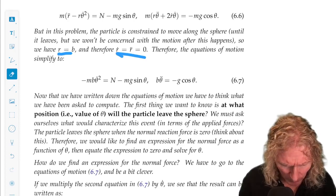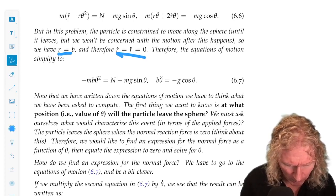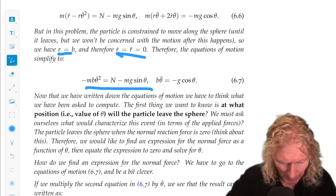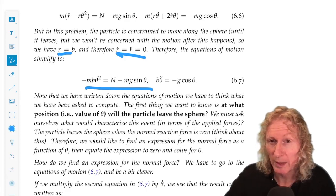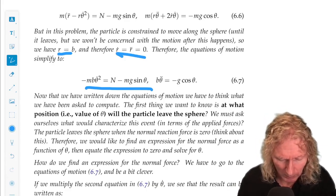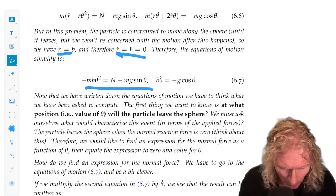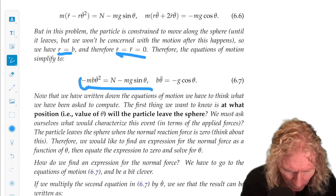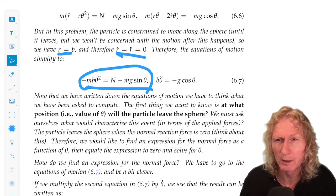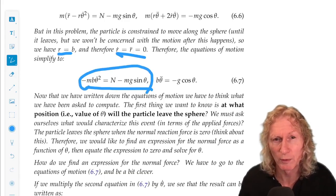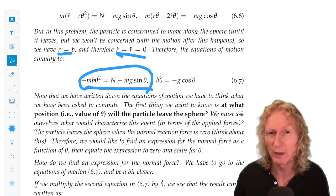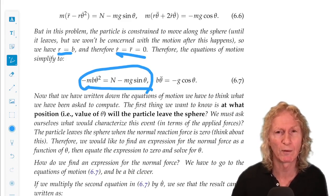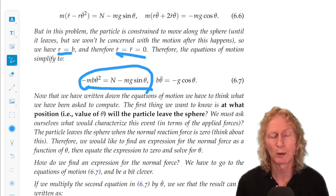It's going to leave the sphere at the angular value where the normal force is zero. Because we see from this expression that as theta varies and theta dot varies, the normal force will vary. So if we could somehow express the normal force just in terms of theta, we could then solve for n as a function of theta, set n equals zero, and we'd have the theta value for when the particle left the sphere.